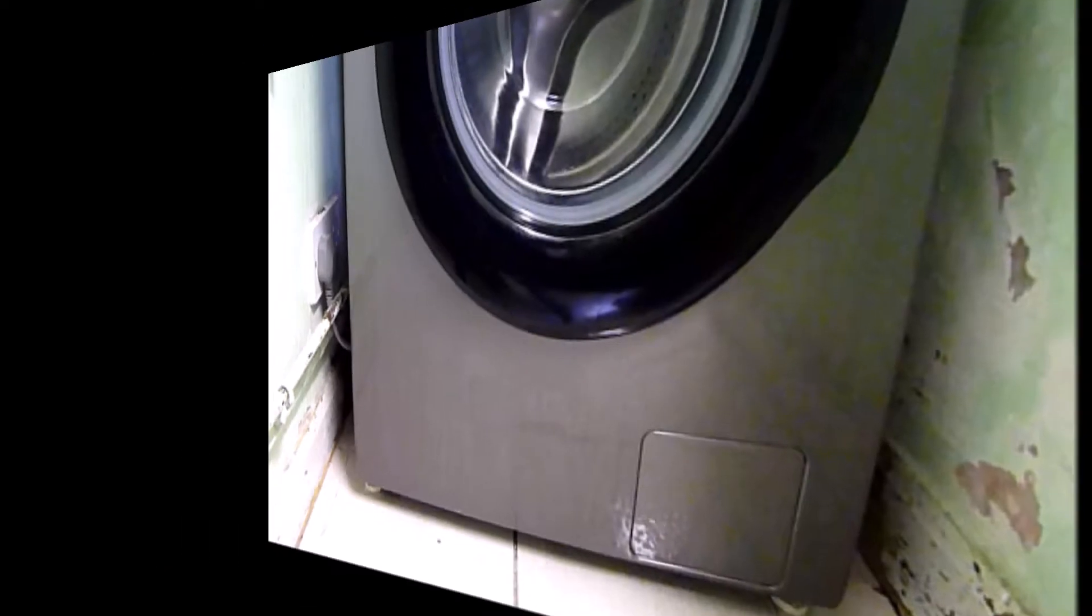To begin, the filter can be found at the front of the washing machine at the bottom. To open the filter cover, just press and it should open, or you may need to use a coin depending on your model.